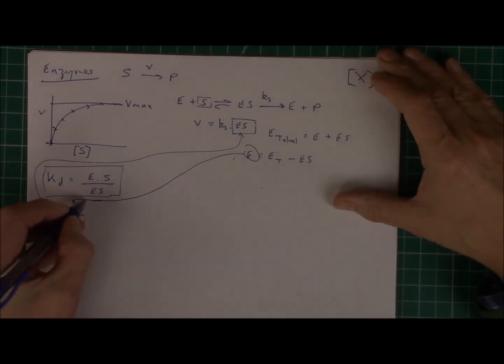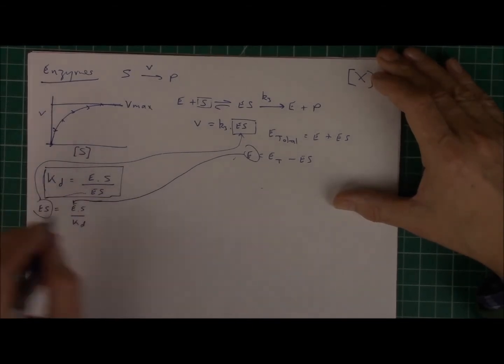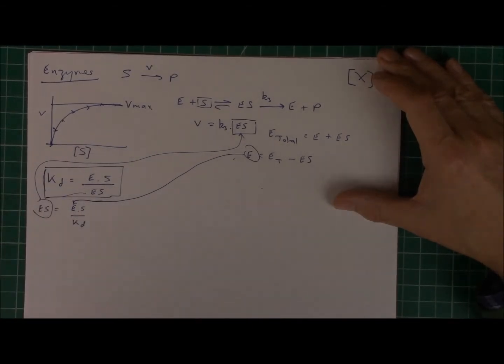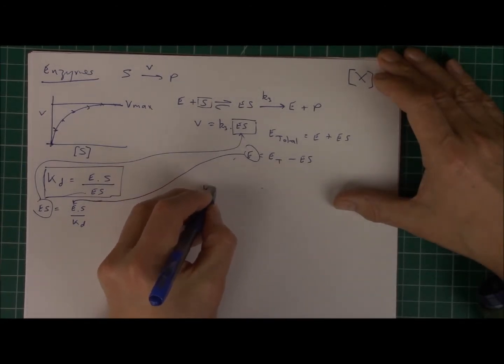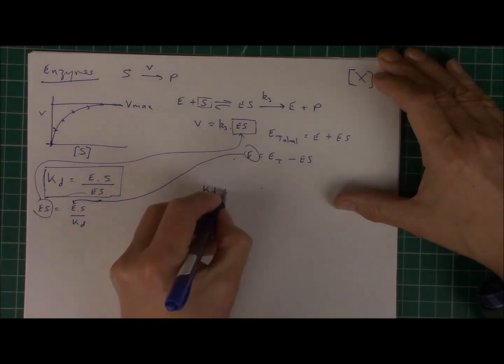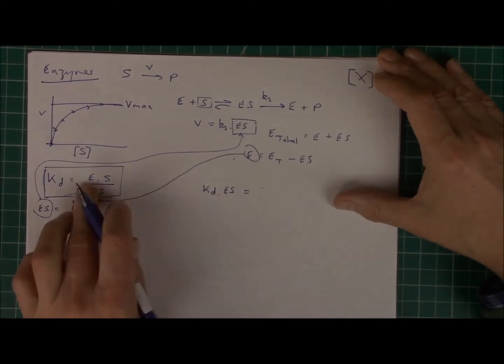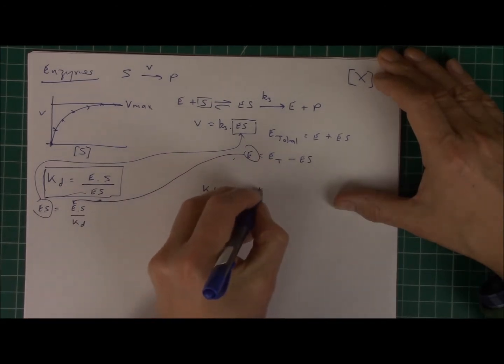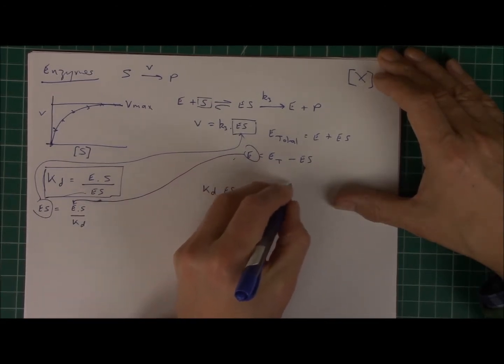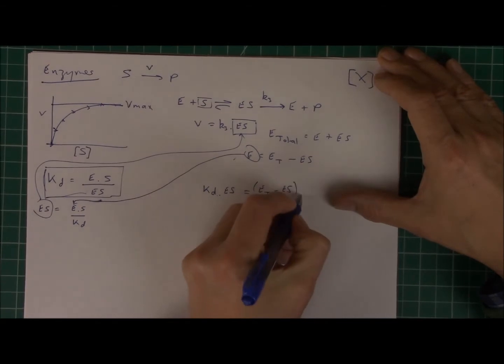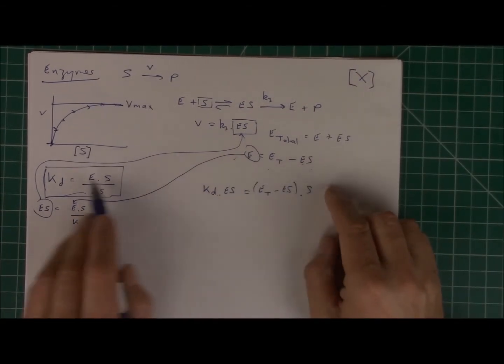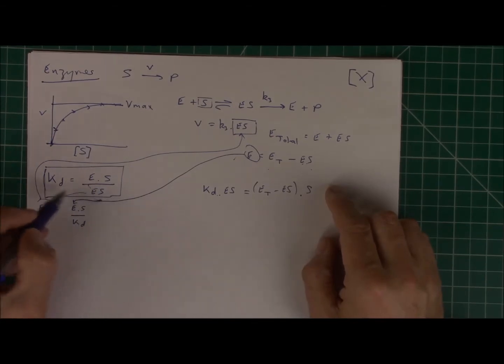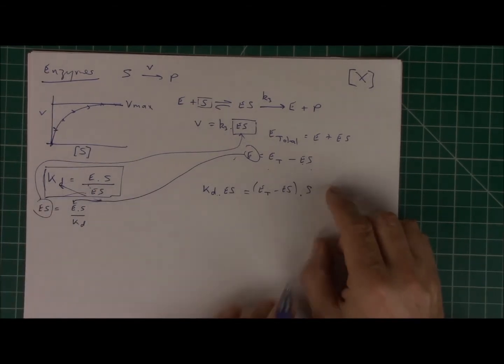All right, now I'm going to use this one. I'm going to use this equation here, because it'll be a bit easier. So let's do that. So KD. Actually, let me bring the ES up. KD times ES equals E. Well, E is now going to be ET minus ES, all multiplied by S. So all I've done here is substituted this equation here into E, and I brought ES up to here. That's all I've done.